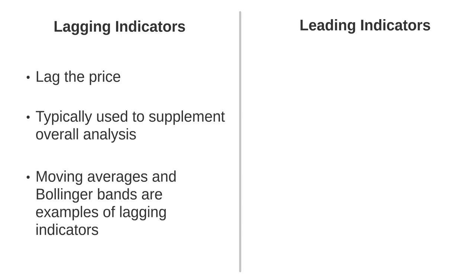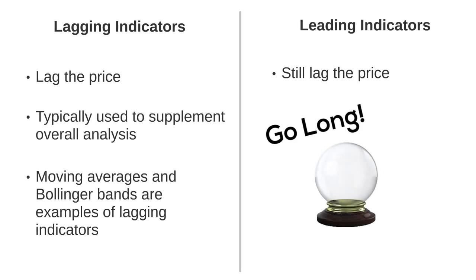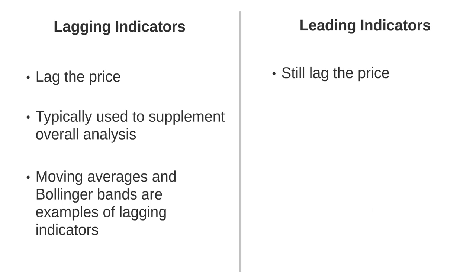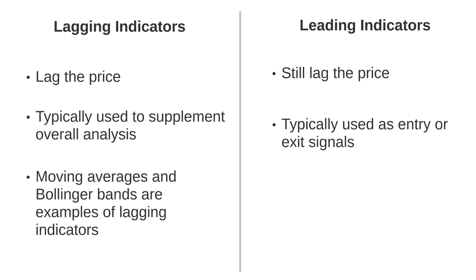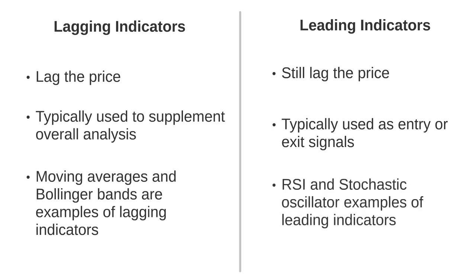Leading indicators, confusingly, still lag price. Sadly, there aren't any indicators that truly lead price unless you are manipulating the price or have a working crystal ball. However, they are referred to as leading indicators as they are usually used to suggest that a particular price move is likely to happen. That is why these indicators are often used as entry and exit signals for trades. Oscillating indicators such as the Relative Strength Index and Stochastics Oscillator are considered to be leading indicators as they both aim to show when a market is in an oversold or overbought state so a potential reversal may be imminent. We will look at these indicators in more detail a little later on.